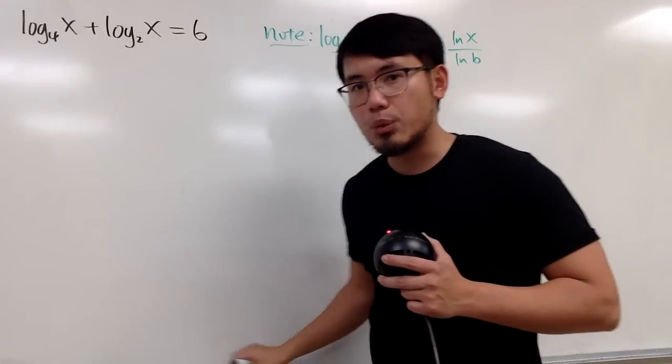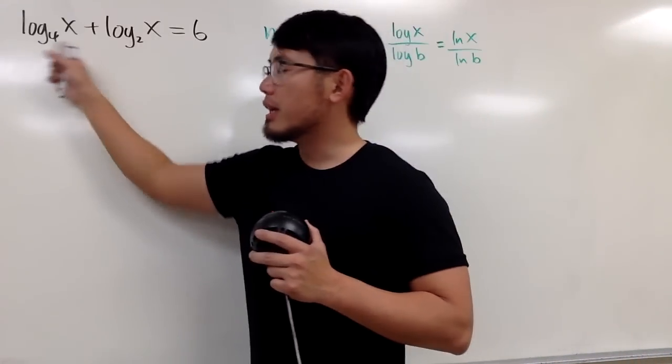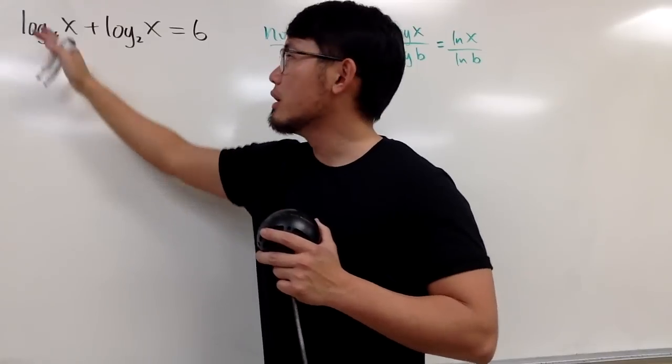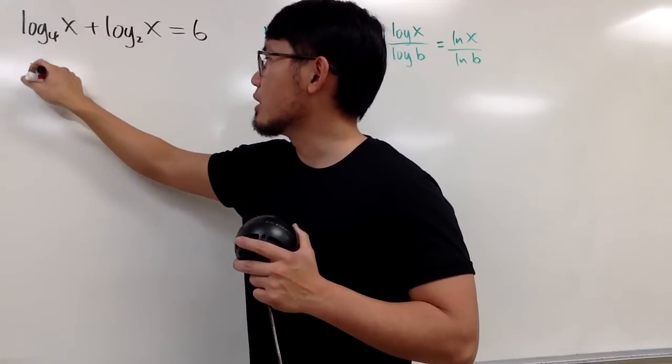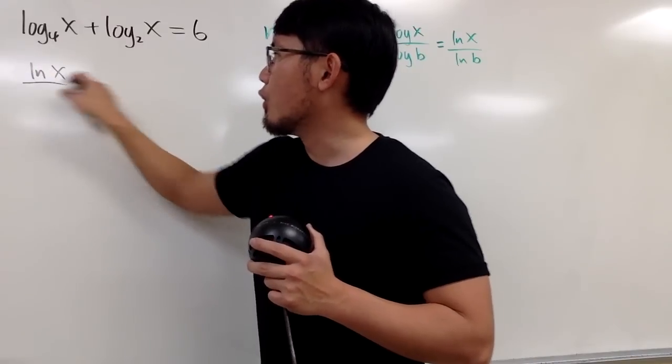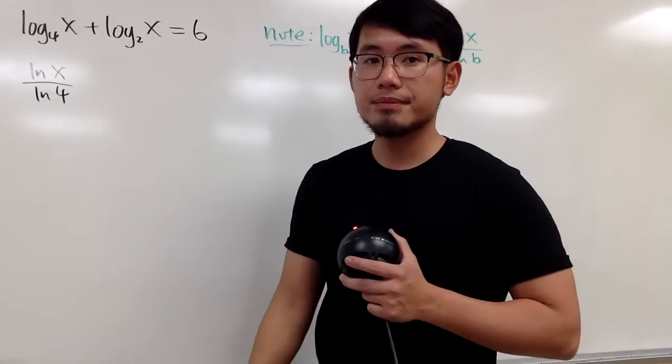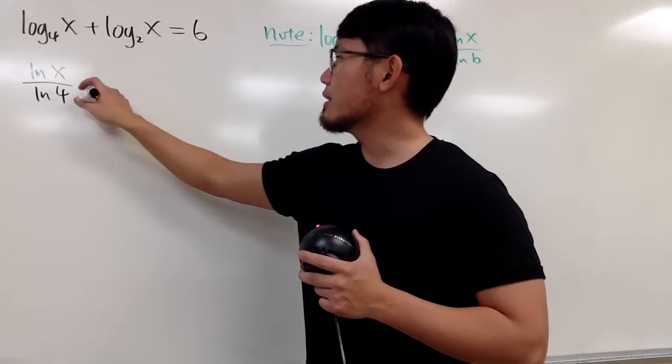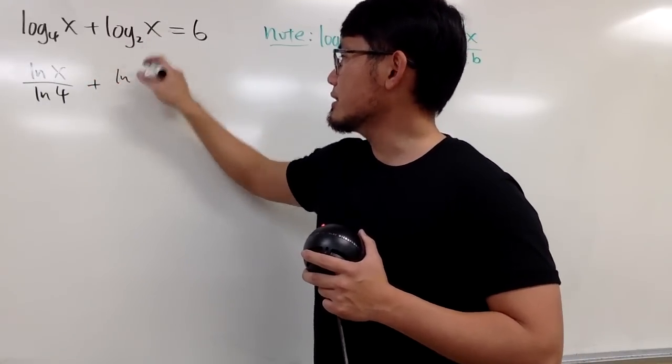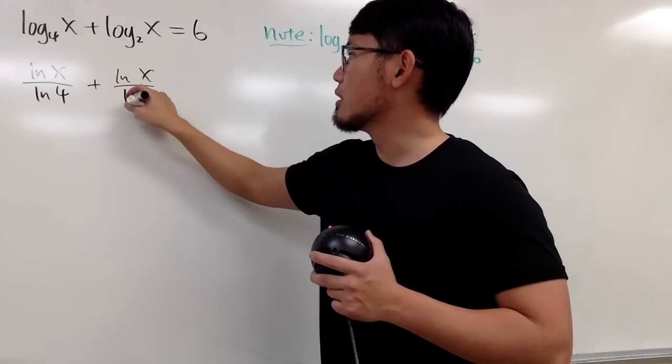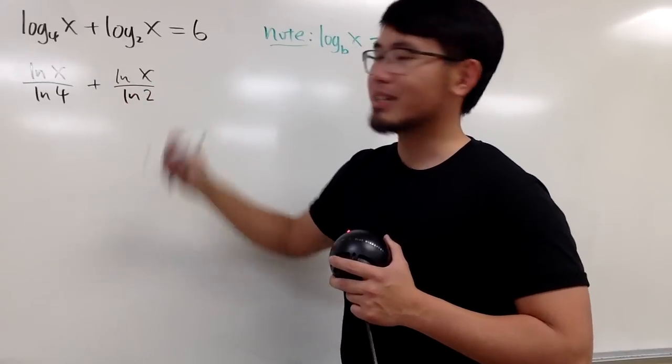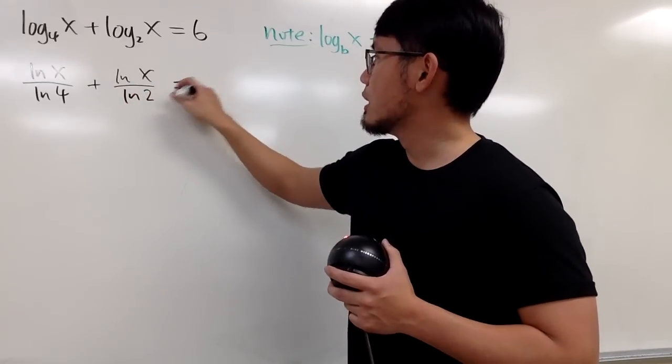So, that's the first change that we need to do. Let's look at this right here where the base is 4. This means I will just take natural log, and then we'll put the x right here, over natural log of 4. And then for this right here, let's just add natural log of x over natural log of 2, equals 6.